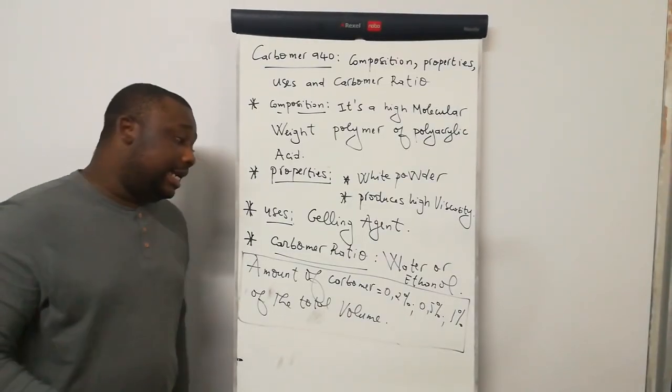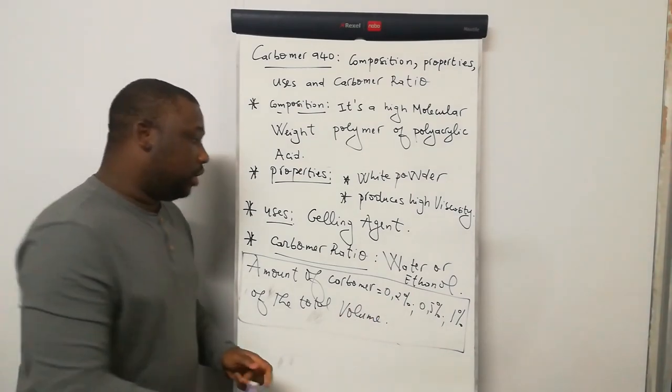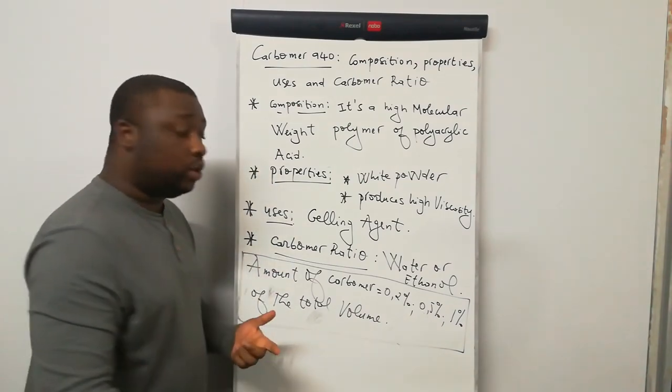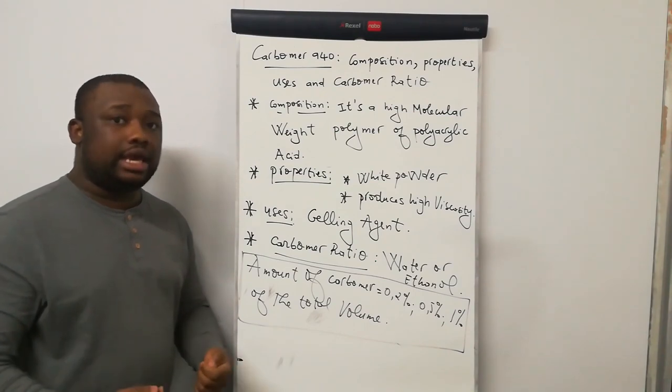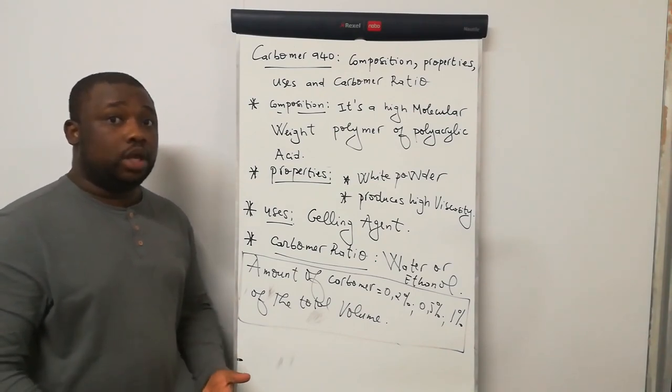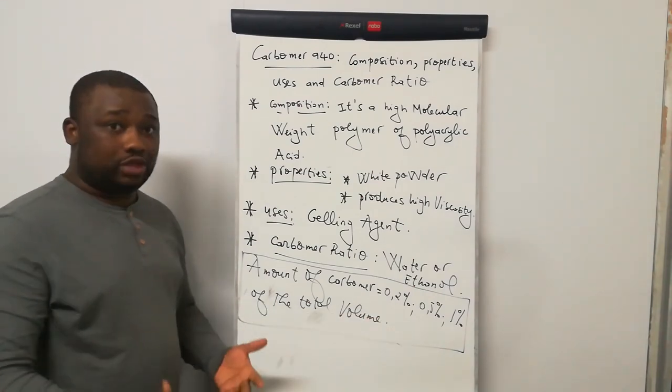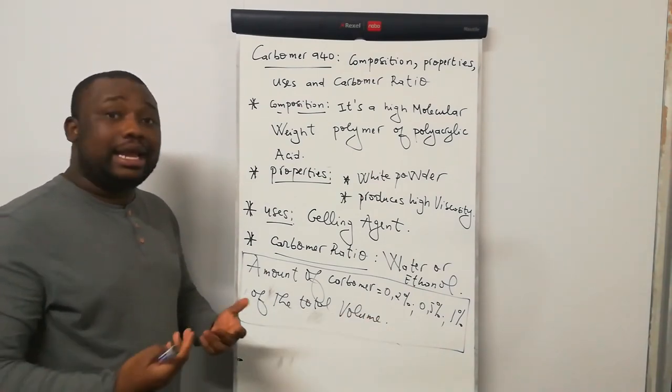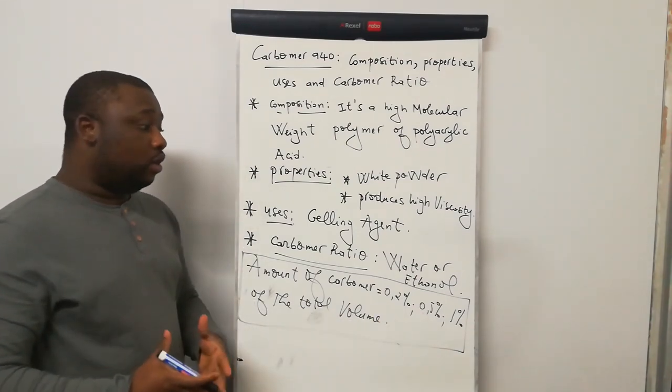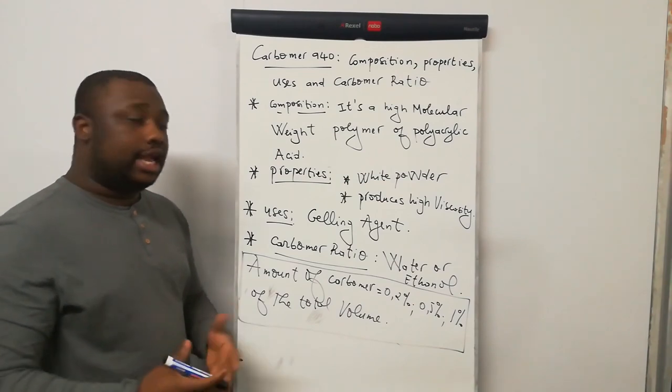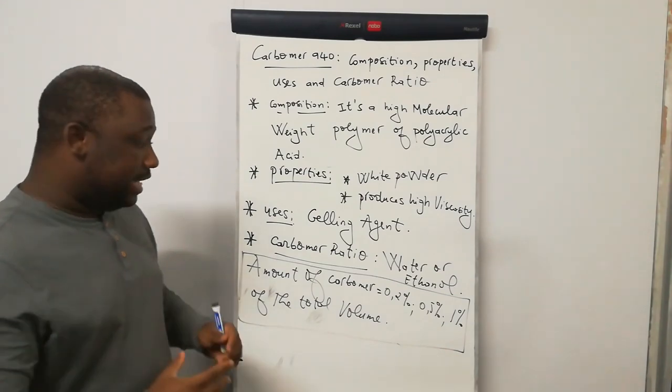As I was saying, you can use 0.2%, 0.5%, or even up to 1%. The difference here will all depend on how thick you want your gel to be. If you just want a light gel, consider 0.2% of the total volume. If you want a medium gel, consider 0.5% of the total volume. If you wish to obtain a heavy gel, you can even go up to 1% of the total volume.